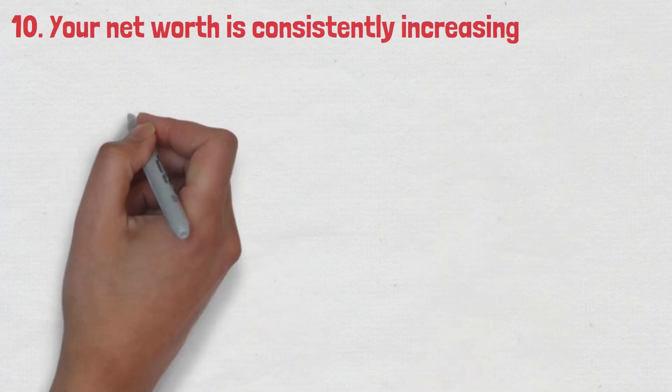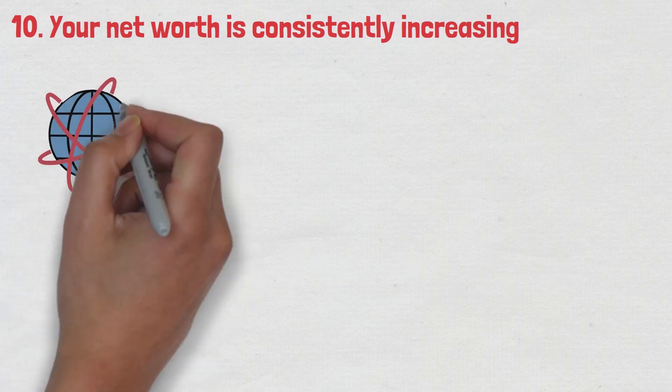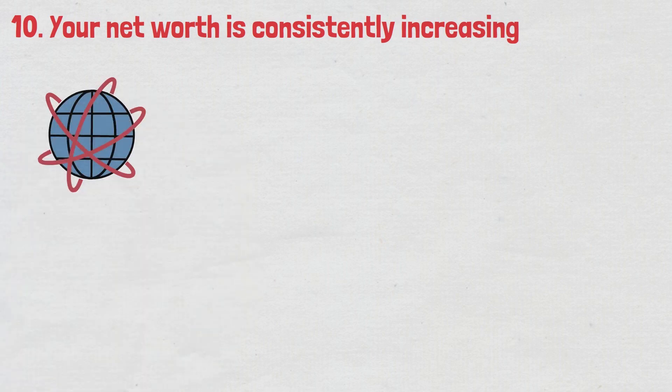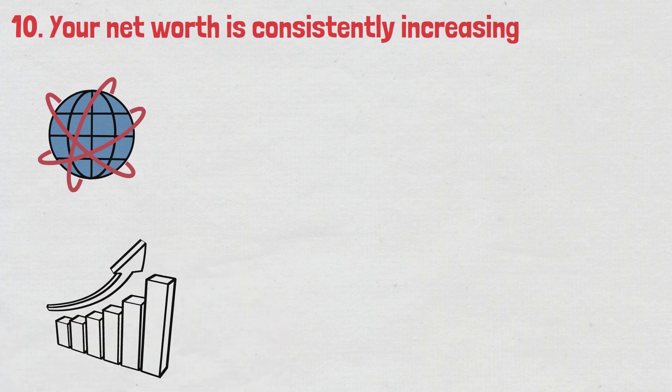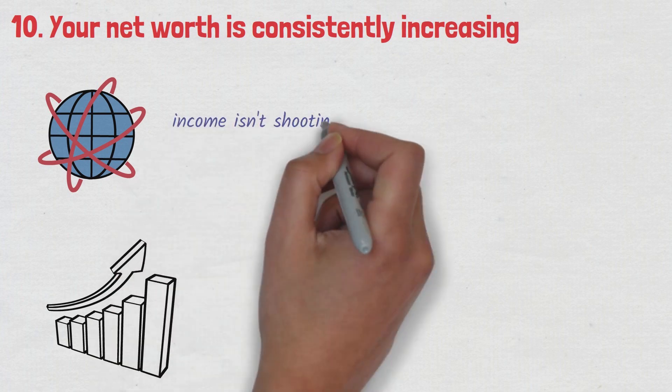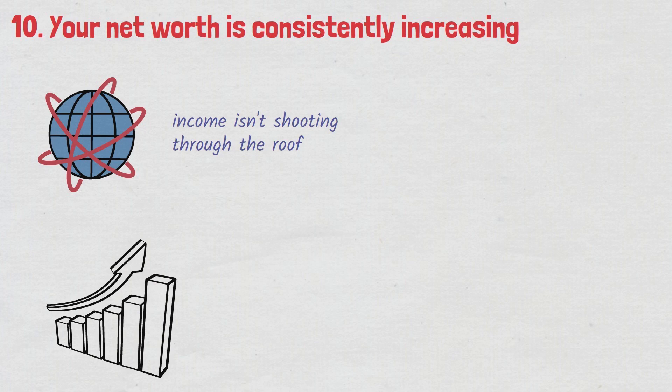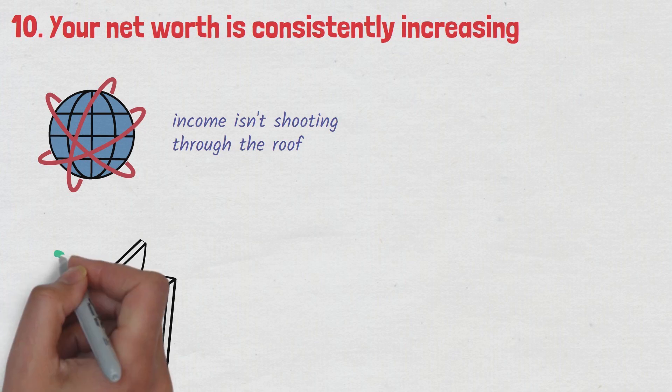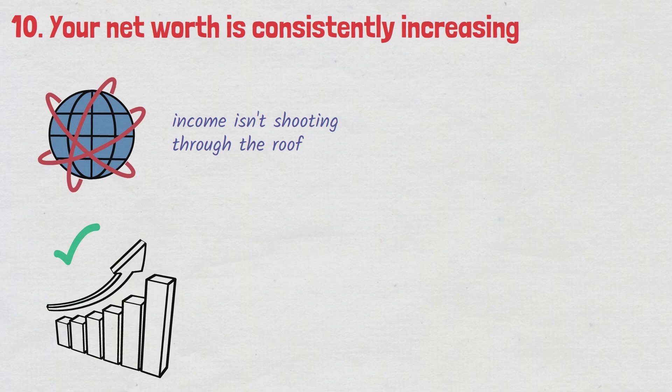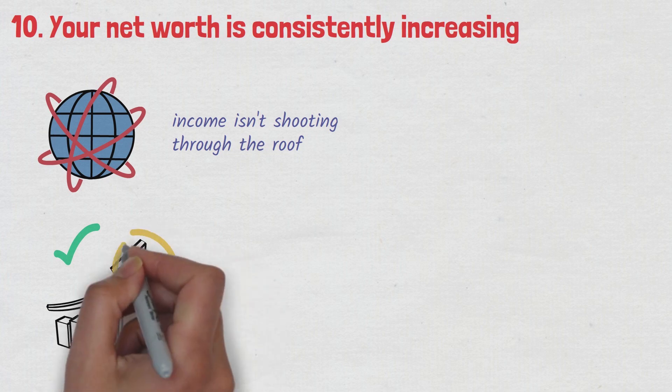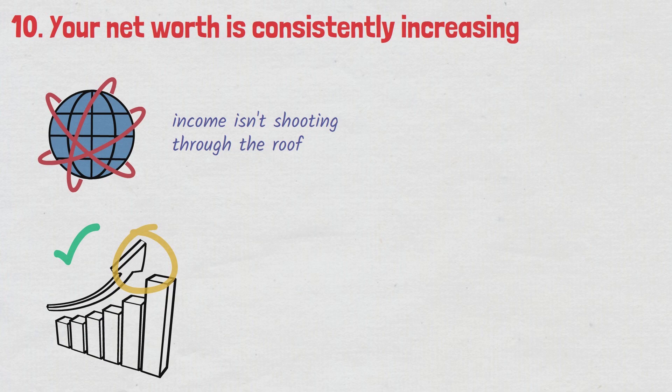Number ten, your net worth is consistently increasing. In the world of finance, it's not always about how much you're earning or how much debt you're carrying. Sometimes it's about the slow and steady growth of your net worth. Think about it this way. Maybe you're still dealing with some debt, or your income isn't shooting through the roof. But if you see your net worth climbing up steadily, you're definitely on the right path. Your net worth is a measure of your financial health. It's the difference between what you own and what you owe. When this number is increasing, it could mean a couple of things.